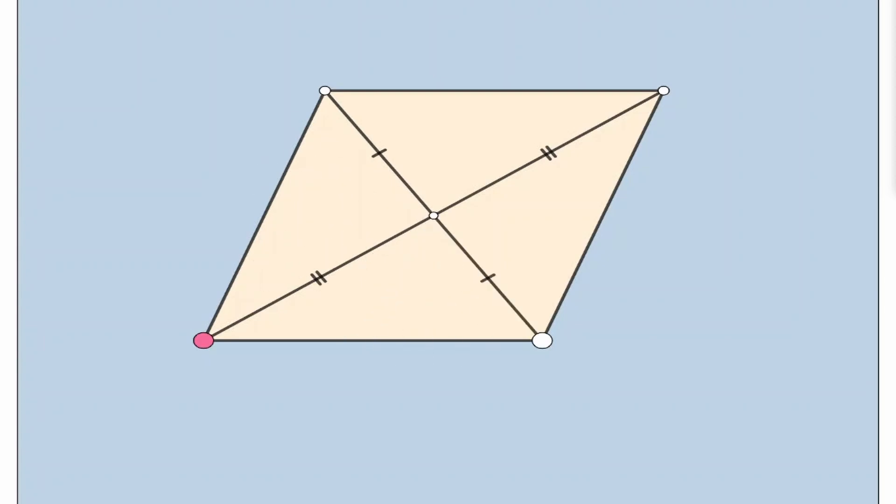Remember, the one property for rhombus is the diagonals bisect each other. Now let's look at the interior angles of this rhombus. They are of the same value. And now notice that we have four different triangles.